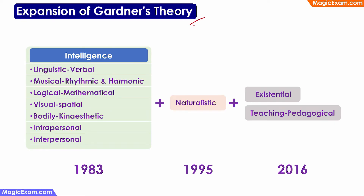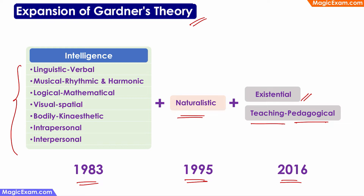Let us look at how Gardner's theory has evolved over the past few years. Originally in 1983, he proposed seven different types of intelligences. In 1995, he added naturalistic intelligence to the list. And more recently in 2016, he has been talking about the existence of other types of intelligences such as existential intelligence, displayed by people more connected with spirituality and the concept of God. He also says that just knowing something is not enough to become a good teacher, so the ability to teach others requires something called teaching and pedagogical intelligence. In this way, Gardner's theory has evolved over the past few years.